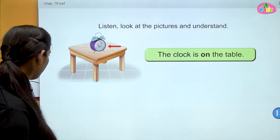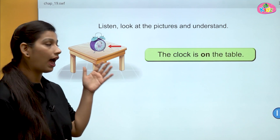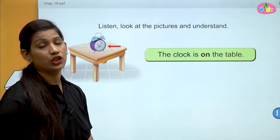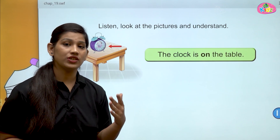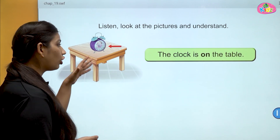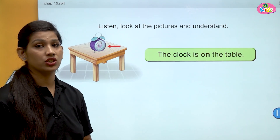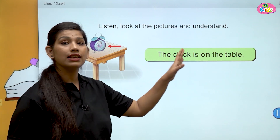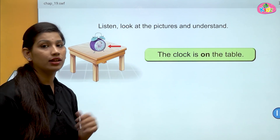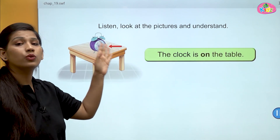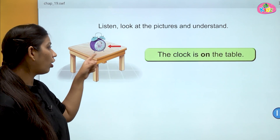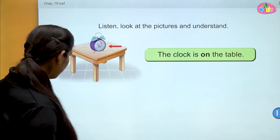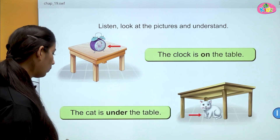Here you will see the first picture — you can see the clock and the table. ON: کوئی بھی چیز اگر کسی چیز کے اوپر ہے، جیسے کہ clock، table کے اوپر ہے، تو ہم اس position کو کہتے ہیں ON۔ The clock is on the table. Table کے اوپر ہے — اوپر کی position کو کہتے ہیں on. Ooper is called as on.